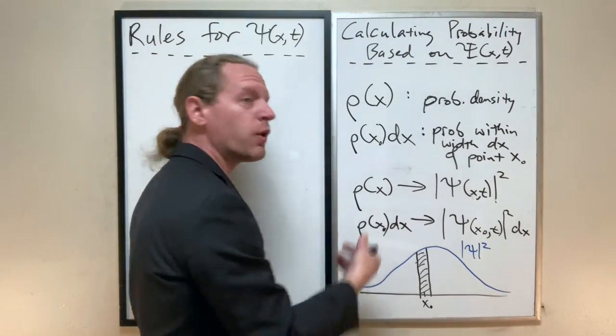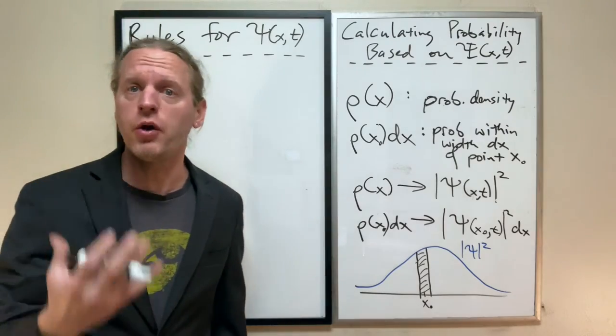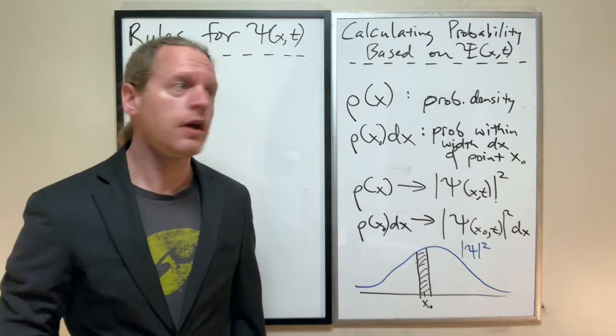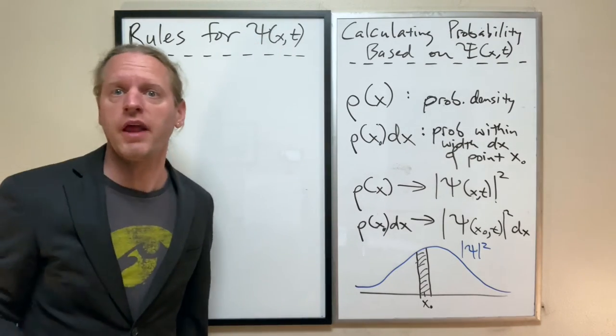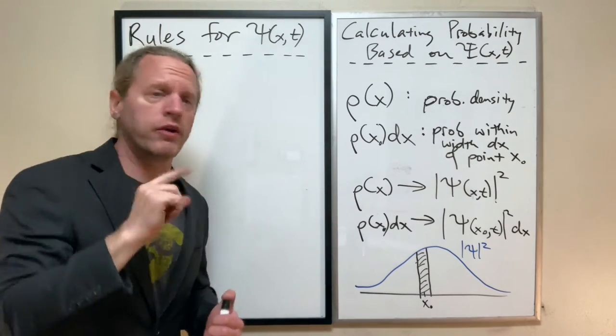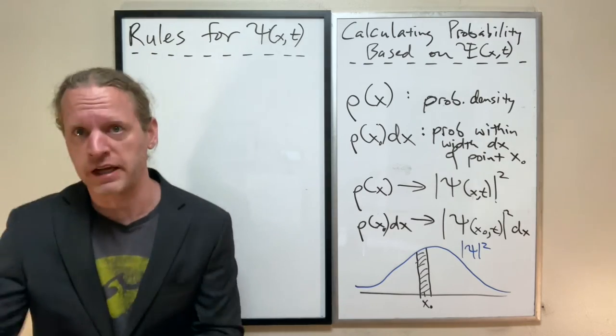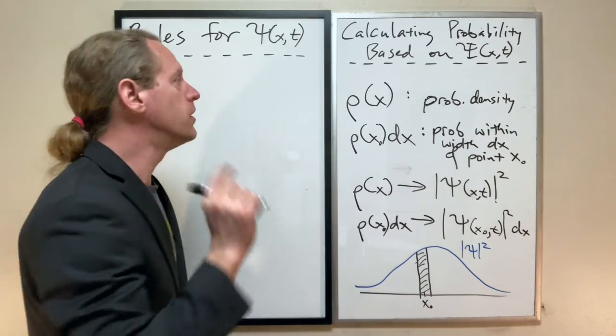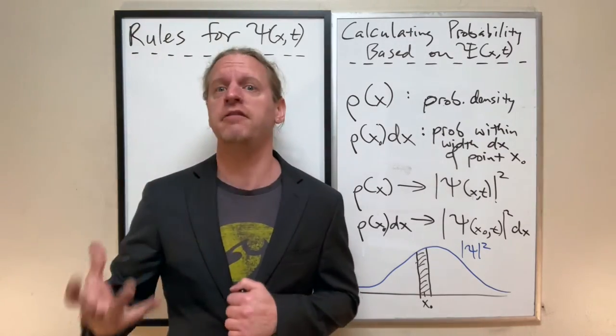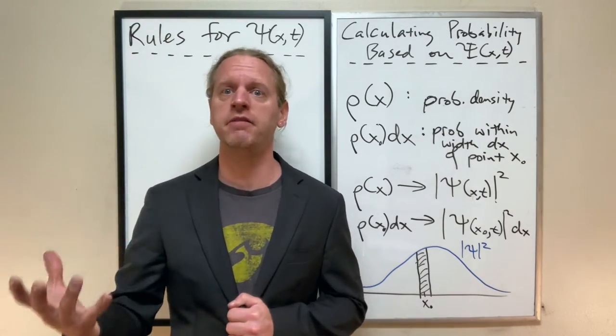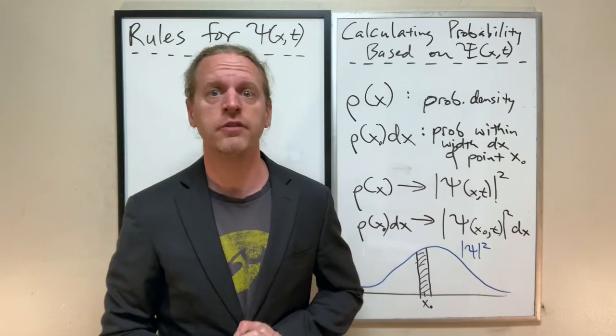Okay, so making these connections will now allow us to use the rules that we already know to be true for probabilities to put some constraints on what this psi function must be like. And I'm going to add one right off the top that is not related to classical probability theory. So here are some rules that psi must obey if it is in fact to accurately convey a quantum probability distribution.